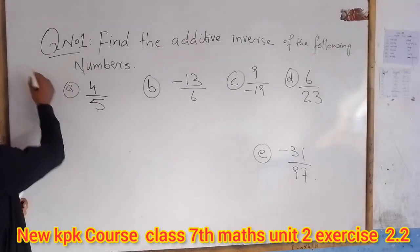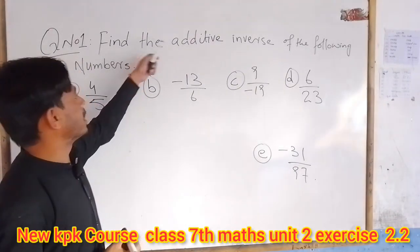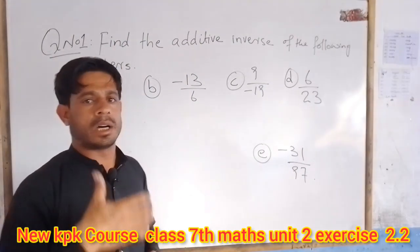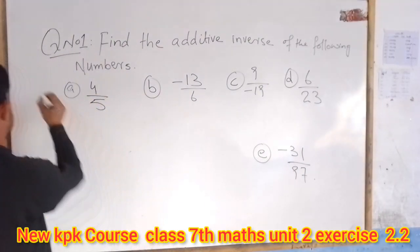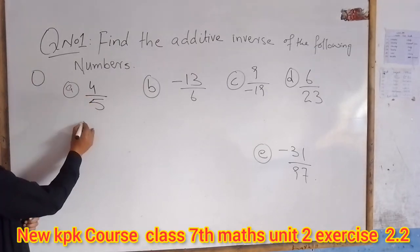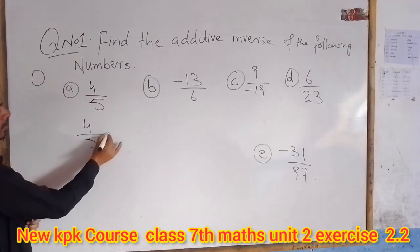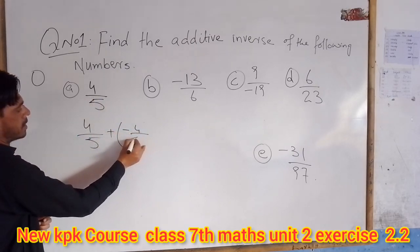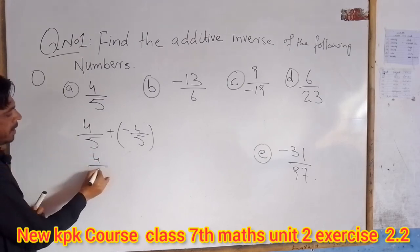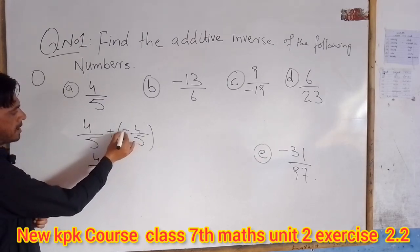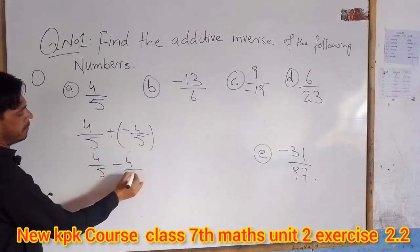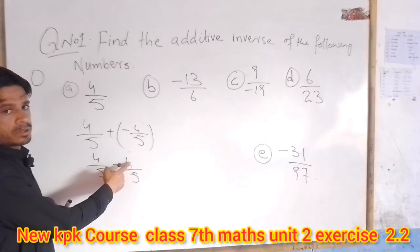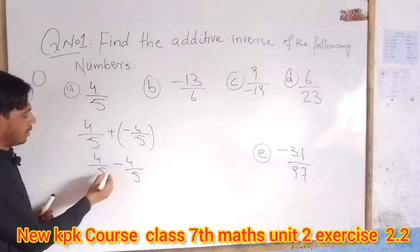Additive inverse means the inverse — ulta — of a number. We will see which number, when flipped (ulta), gives a result of zero. For example, the inverse of minus 4 divided by 5: 4 divided by 5 plus minus 4 divided by 5 is zero.